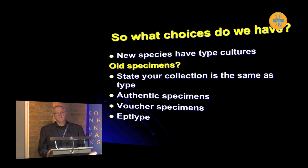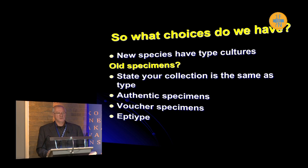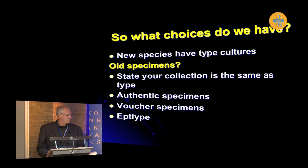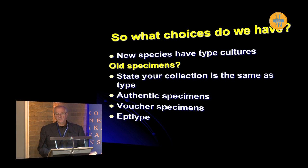So what can you do to improve the situation? In the case of most new species, they are now described with cultures, but as Pedro showed, less than 30% have cultures and sequences with them. Old specimens have no cultures associated with them. Options include saying 'this is the same species' — which is an opinion that may be right or wrong — using authentic specimens, using voucher specimens, or of course epitypes.